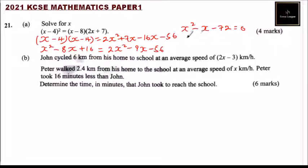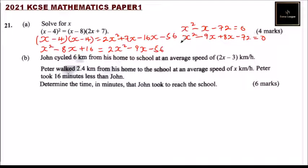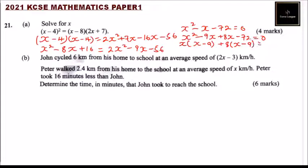We factorize by finding two numbers that multiply to minus 72 and add to minus 1. Those numbers are minus 9 and 8. So: x squared minus 9x plus 8x minus 72 equals 0, which factorizes as (x minus 9)(x plus 8) equals 0.